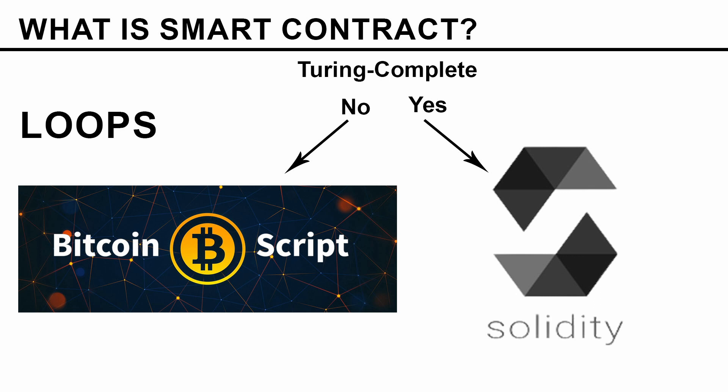The reason loops are not in Bitcoin Script is not by accident — it is intentional. They didn't include loops in Bitcoin Script because smart contracts and programs actually run on each node in the blockchain, and they can really slow down the network. If somebody intentionally or unintentionally creates a program with an infinite loop — a loop that does not have an end — it can destroy or hang the whole blockchain. I bet you have run into an infinite loop once in your programming life, and you had no other option but to shut down the compiler or software. So loops in general are a dangerous tool if used incorrectly or in the wrong hands.